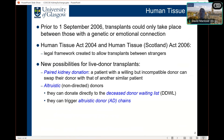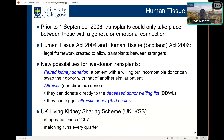Through altruistic or non-directed donation, an altruistic donor — someone who wants to give a kidney but has no identified recipient — can donate directly to the deceased donor waiting list, which has over 5,600 patients in the UK, or they can trigger altruistic donor chains that can benefit multiple recipients. Following the introduction of the Human Tissue Act, the UK Living Kidney Sharing Scheme was born and has been in operation since 2007. Every quarter, a matching run is carried out in which an algorithm finds an optimal set of exchanges subject to certain optimality criteria.